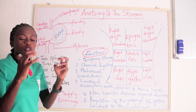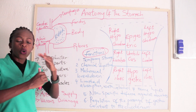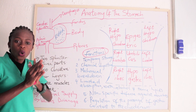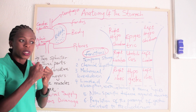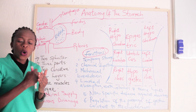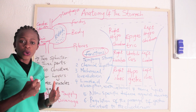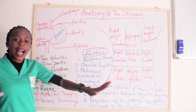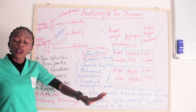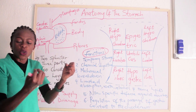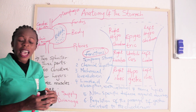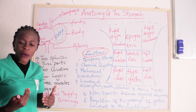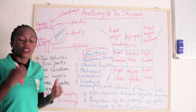We also have what we call rugae. Rugae is when the stomach is thrown into folds. When there is nothing in the stomach, it is thrown into folds. When we take in food, the folds spread out to accommodate the food and also increase the surface area of the stomach.